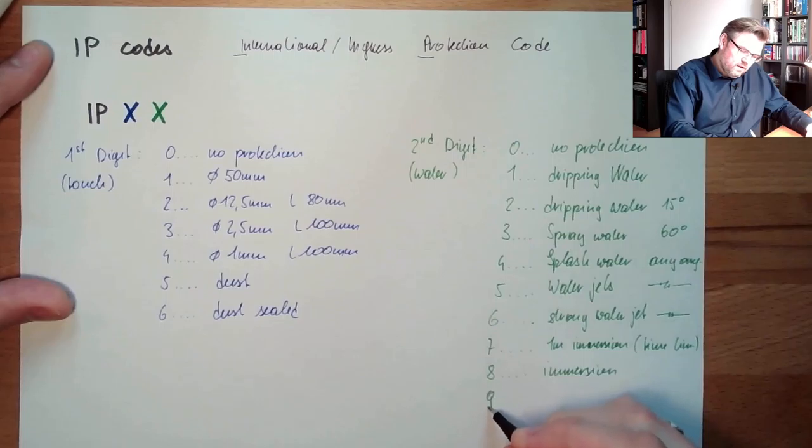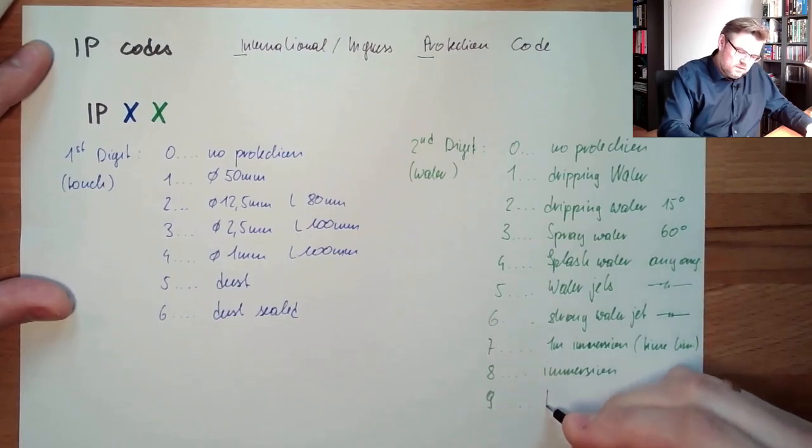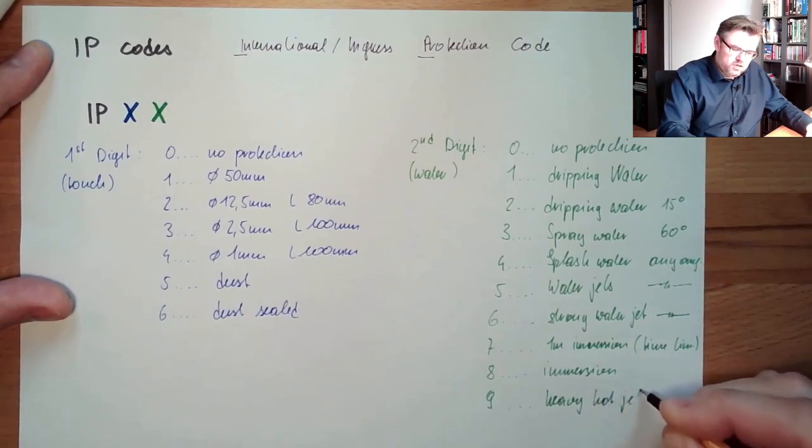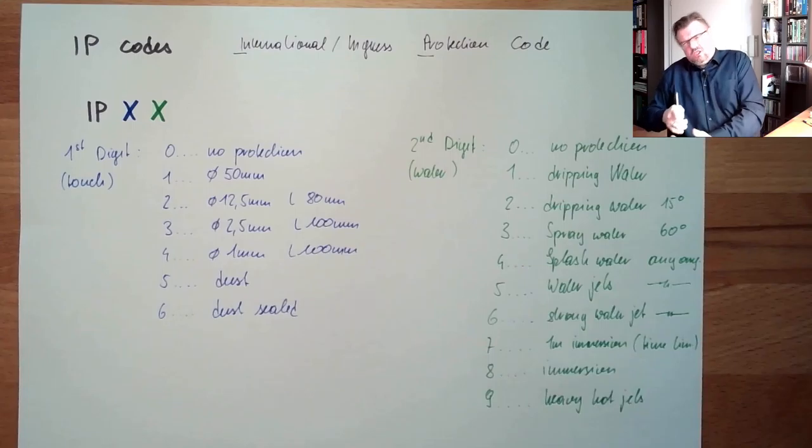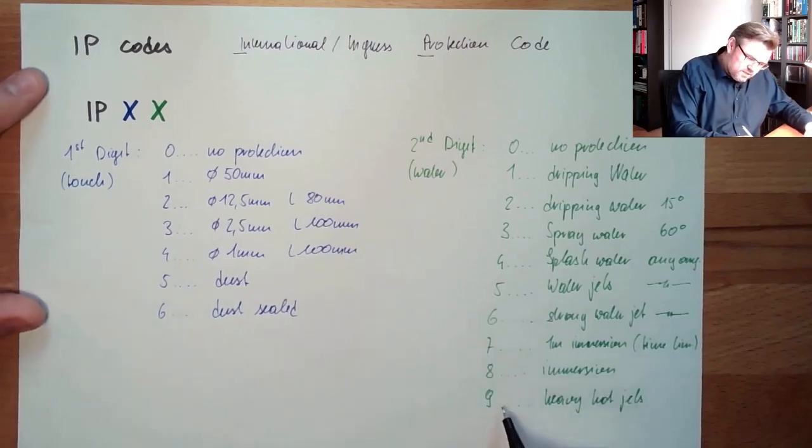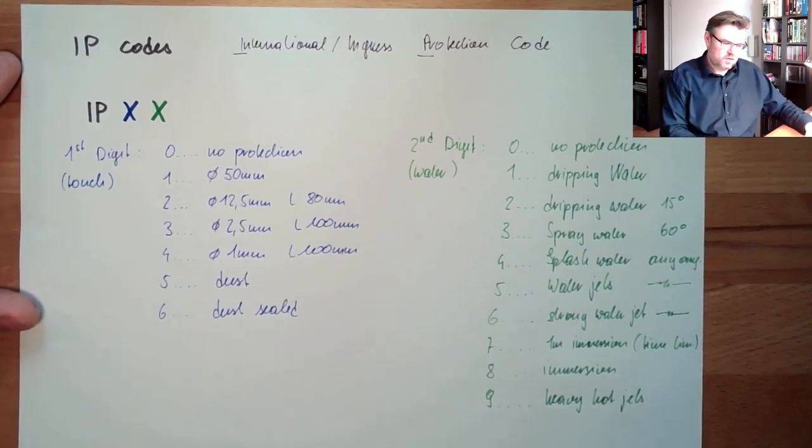And finally, there's 9. This is heavy and hot jets. High pressure cleaners and some really heated. This is then IP9, IPX9.